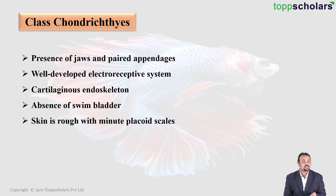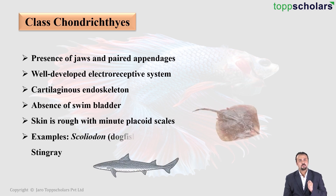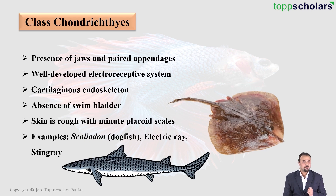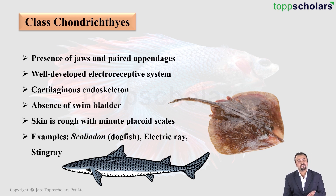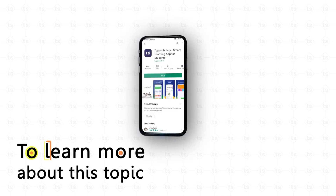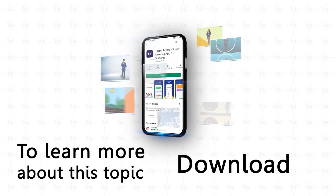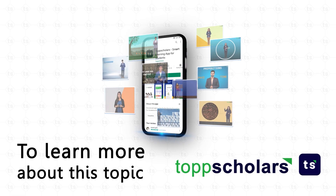Their skin is very rough with very tiny placoid scales. Good examples of Chondrichthyes include sharks like Scoliodon and certain types of rays like the electric ray and stingray.